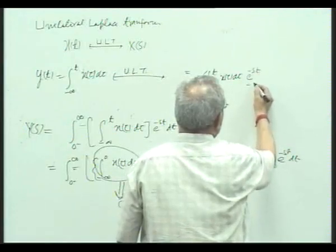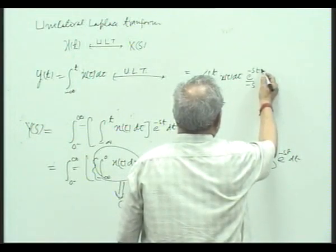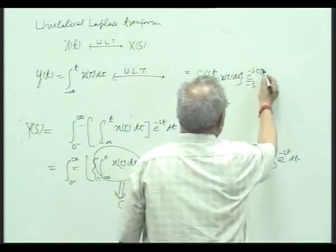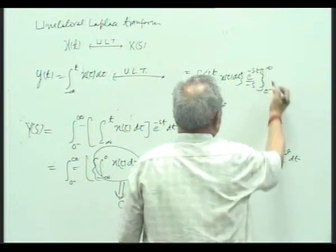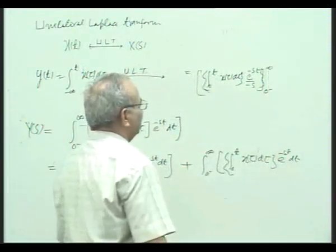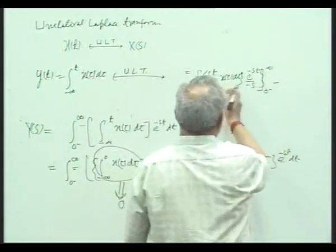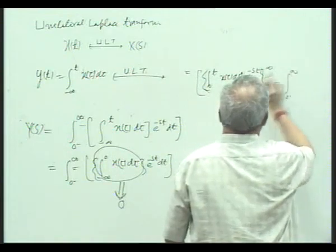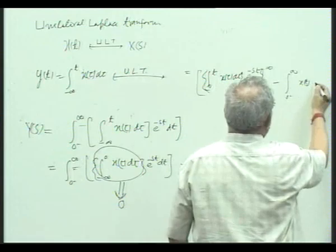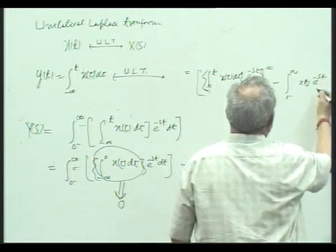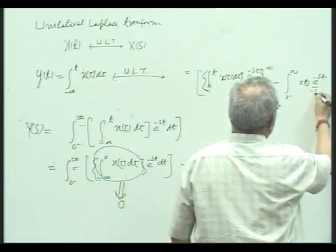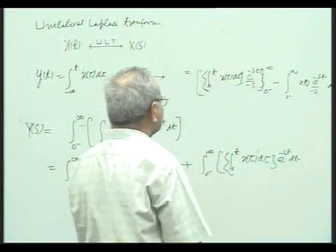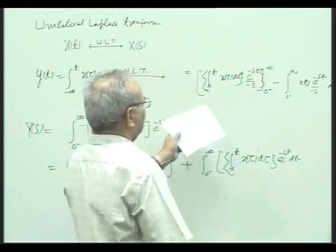This becomes the integral from zero minus to infinity of x(τ) dτ evaluated at minus infinity. The limit at which it is to be evaluated is zero minus to infinity. Now, minus the differential coefficient of this — which becomes the integral of the differential coefficient of this. So, if I differentiate, this becomes x(τ), and e^(−st) divided by minus s, divided by minus s, into z(τ).